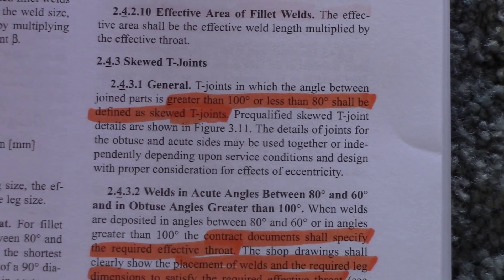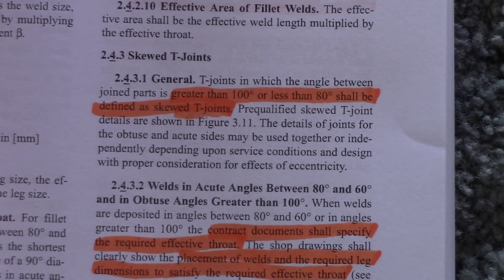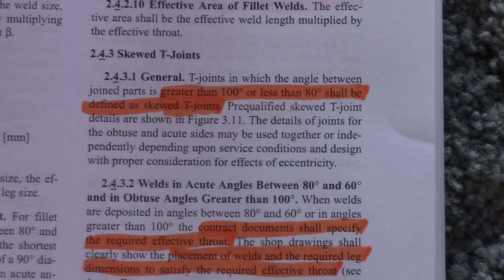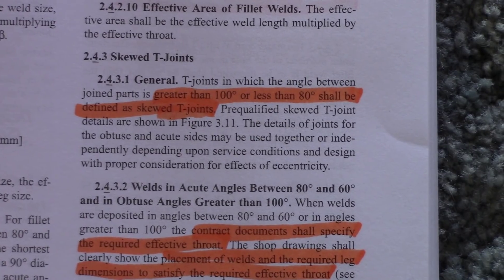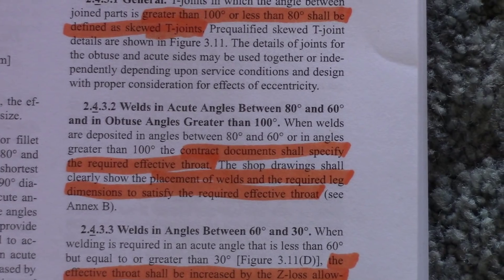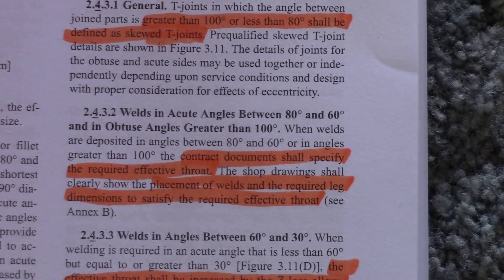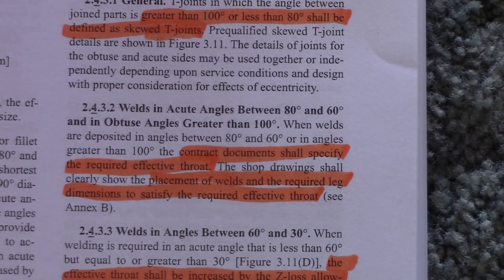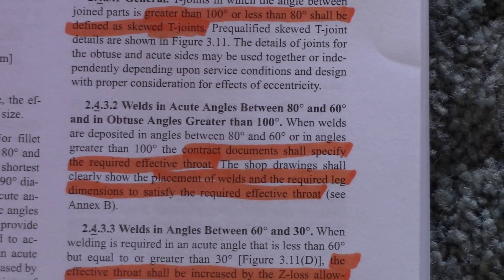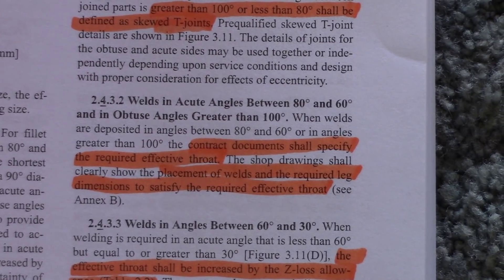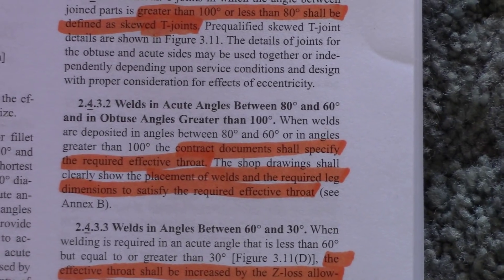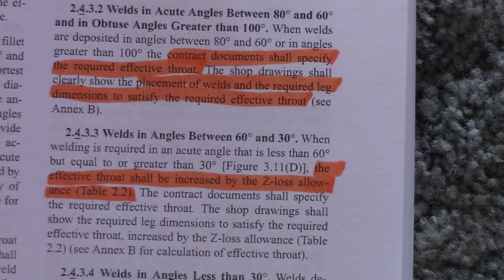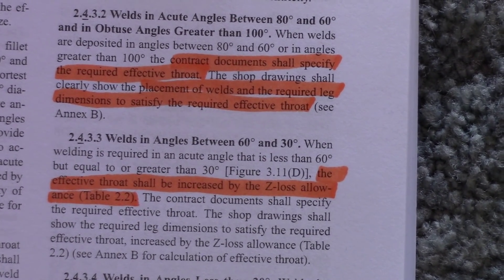The next page, page 7, section 2.4.3, has the most information on skewed T-joints. In general, T-joints where the angle between joint parts is greater than 100 or less than 80 shall be considered a skewed T-joint. For welds in acute angles between 80 and 60, and in obtuse angles greater than 100, the contract documents shall specify the required effective throat. For placement of welds and required leg dimensions to satisfy the required effective throat, you have to see annex B — though that probably won't be on the test since they don't cover much on annexes.